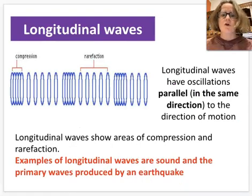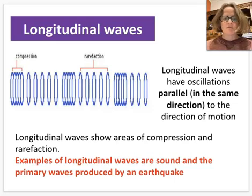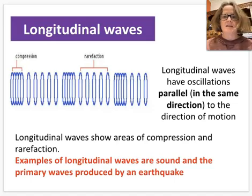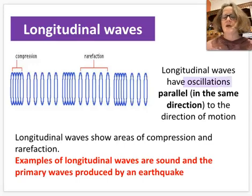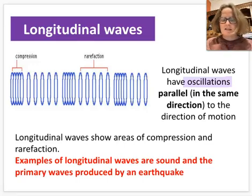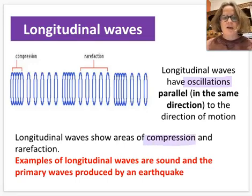The second type of wave is longitudinal waves. Examples include sound waves and a type of wave found in earthquakes called the primary wave — these are compression waves. In longitudinal waves, oscillations — the movement of the particles — are in the same direction as the wave energy is moving, parallel to the direction of motion. With a slinky, instead of moving side to side, it squishes and stretches, creating areas of compression and rarefaction.